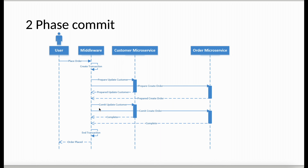Both services respond back with 'complete', and the transaction is finished — the user is shown that the order is placed. However, there are a couple of issues with the two-phase commit. The first is that a lot of unnecessary network calls are made to different services. For example, if the customer service cannot send a positive response, why do we need to send the prepare phase request to all the other services involved?